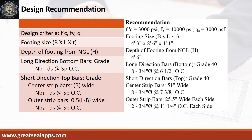Design recommendation as follows: FC prime equals 3,000 psi, FY equals 40,000 psi, QA equals 3,000 PSF. Footing size is 4 feet 3 inches by 8 feet 6 inches by 13 inches. Depth of footing from natural grade line, 4 feet 6 inches. Long direction bars of grade 40: 8 pieces 3/4-inch diameter bar at 6.5 inches on center. Short direction bars of grade 40: center strip bars 51 inches wide, 8 pieces 3/4-inch diameter bar at 7.38 inches on center. Outer strip bars 25.5 inches wide each side, 2 pieces 3/4-inch diameter bar at 11 and 1/4 inches on center each side.